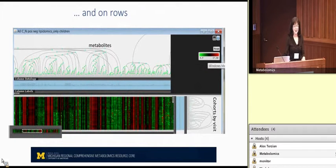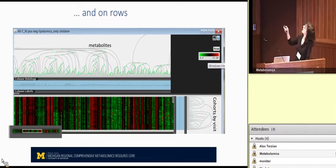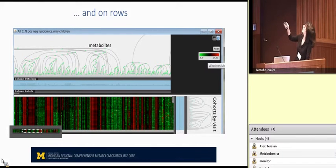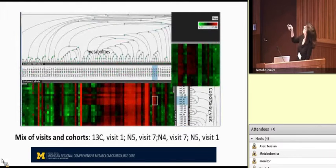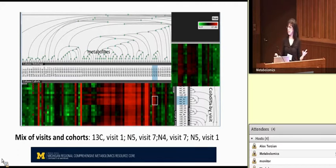You can cluster on both rows and columns and then begin to see patterns. When we watch how people work with these, they spend a lot of time on the dendrograms. As Chuck has talked about, you try to find clusters that might mean something — the ones that are pretty close together. Then you can focus in on just a small cluster and see what those values are. What you might see is a mixture of controls and disease cohorts and different visits, and you might want to look into why they are mixing like that.